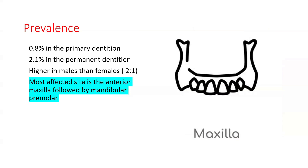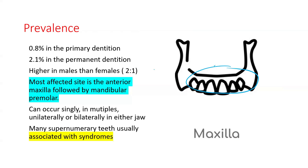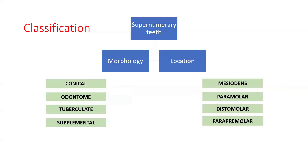The most commonly affected site is the anterior maxilla, followed by the mandibular premolar. It can occur singly or in multiples, unilaterally or bilaterally. When it occurs in multiples, it is usually associated with a syndrome.